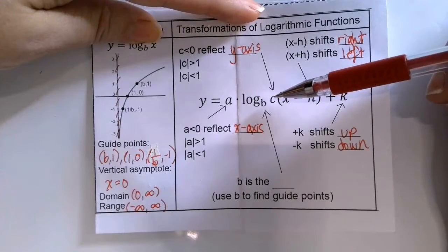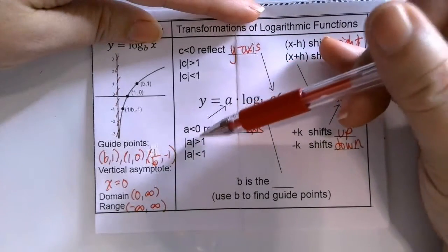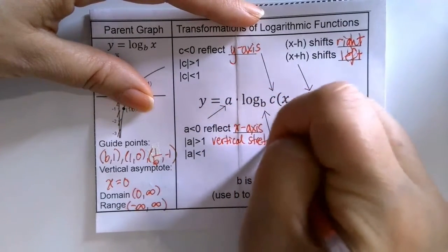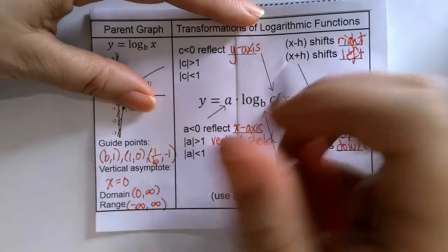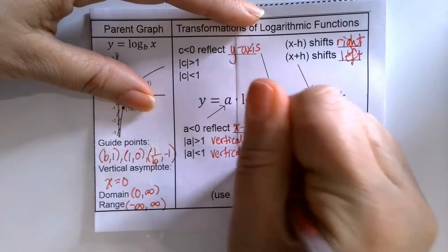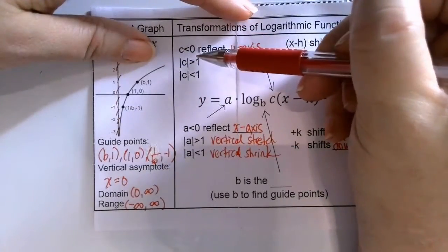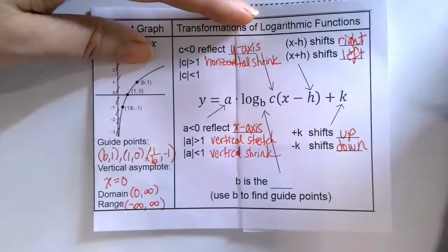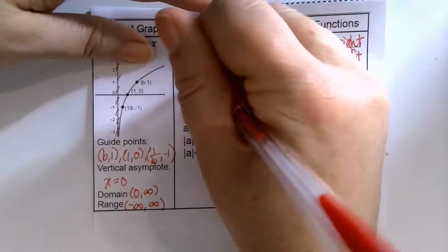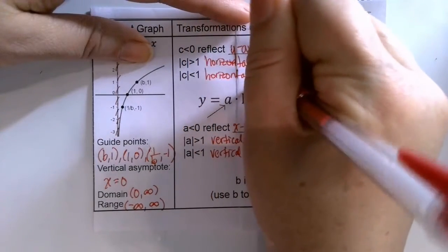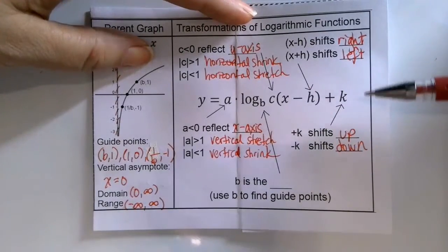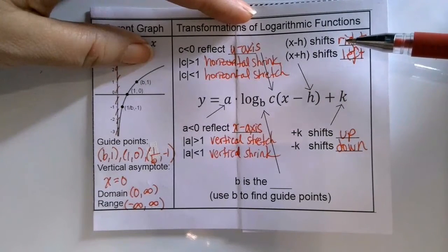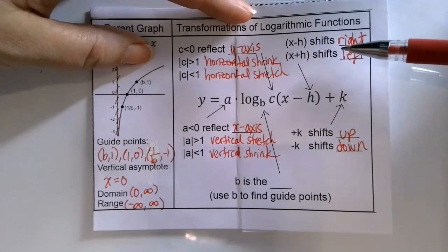The a and c also control dilations, which are non-rigid transformations. If the absolute value of a is greater than 1, that's a vertical stretch. If the absolute value of a is less than 1 (a fraction between 0 and 1), that's a vertical shrink. If the absolute value of c is greater than 1, that's a horizontal shrink. If c in absolute value is less than 1, that's a horizontal stretch. These transformations are exactly the same as for any parent function — exponential, square root, rational, or polynomial.